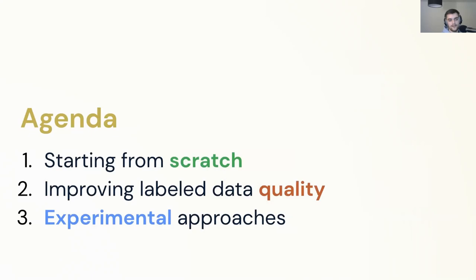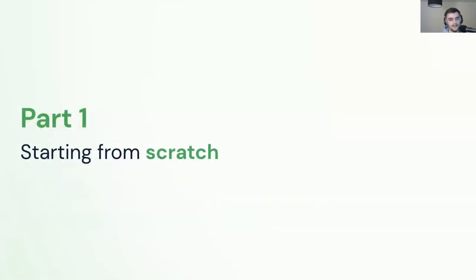There will be three main points today. First, how to start from scratch, assuming you have no or very little labeled data but you have raw data already collected. Second, Div will talk about improving already labeled data quality — because labeled data is not always clean, you have to refine it. And last but not least, Leo will talk about some experimental approaches we also played around with at Kern.ai.